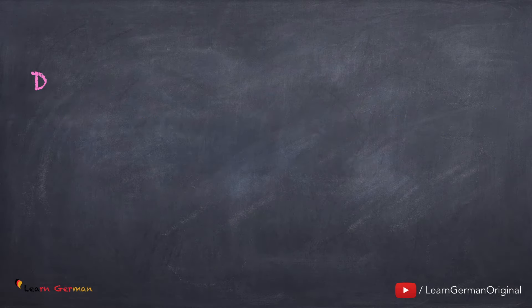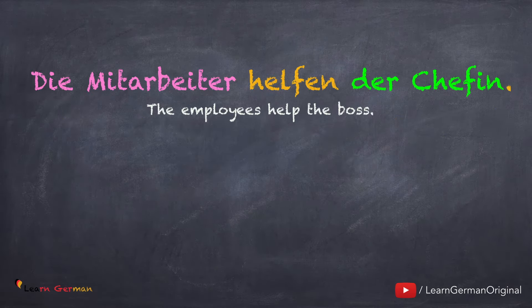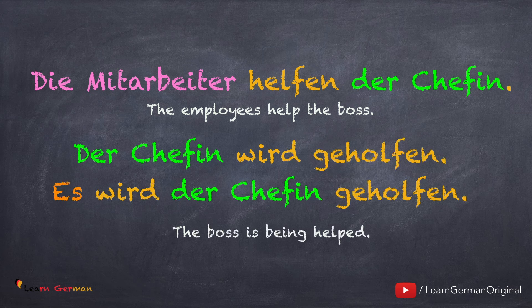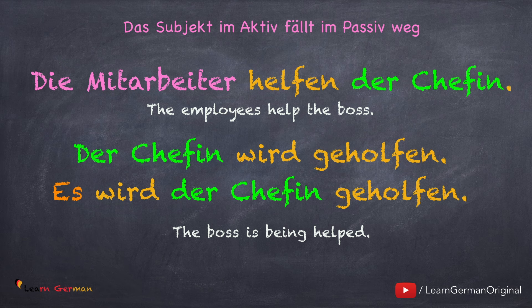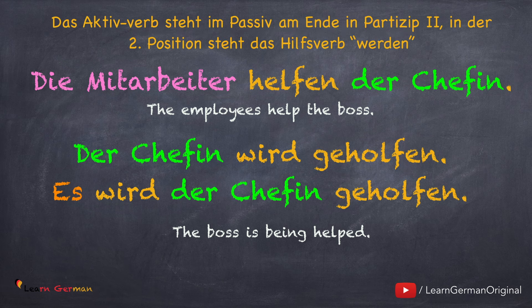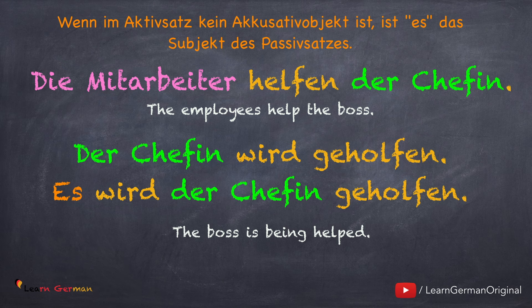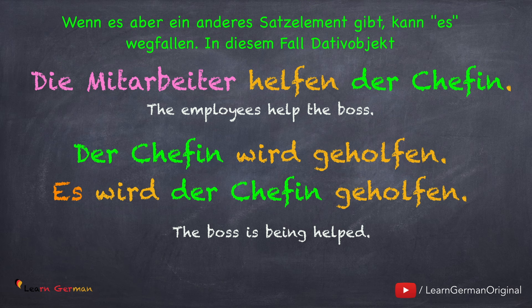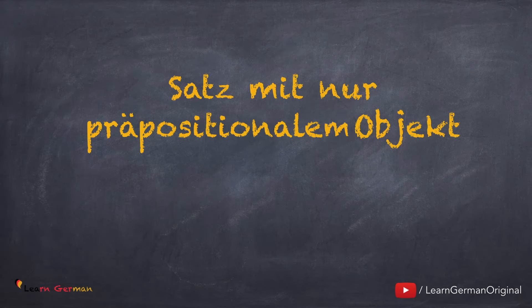Es gibt auch Sätze, die nur ein Dativobjekt haben. Hier ist ein Beispiel: Die Mitarbeiter helfen der Chefin. Helfen ist ein Dativverb, deshalb der Chefin. Hier im Passiv fällt die Mitarbeiter weg. Der Chefin wird geholfen, oder es wird der Chefin geholfen. Das Verb steht am Ende in Partizip 2 — geholfen. In diesem Aktivsatz ist kein Akkusativobjekt, deshalb ist es das Subjekt im Passivsatz. Wenn es aber ein Dativobjekt gibt, kann es wegfallen: Der Chefin wird geholfen.